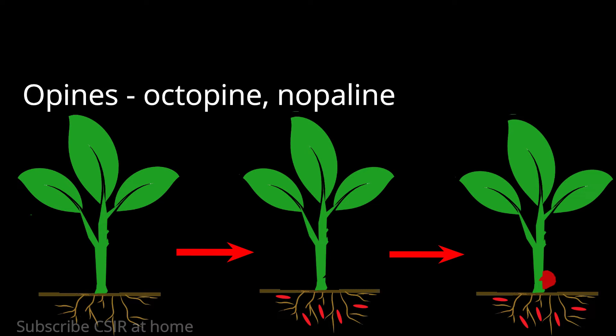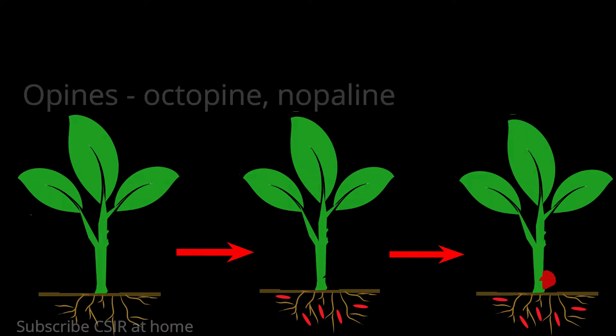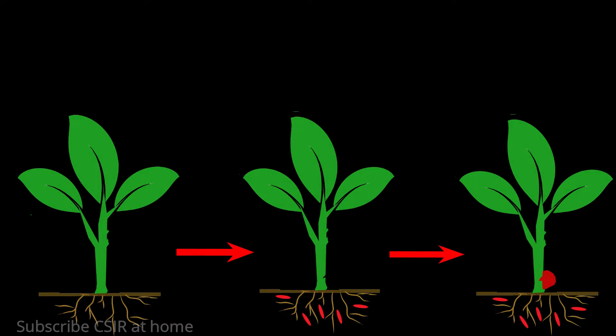The bacteria can catabolize and use opines as a carbon and nitrogen source. Importantly, crown gall disease can also be induced in plants by inoculation of wound sites with Agrobacterium tumefaciens.